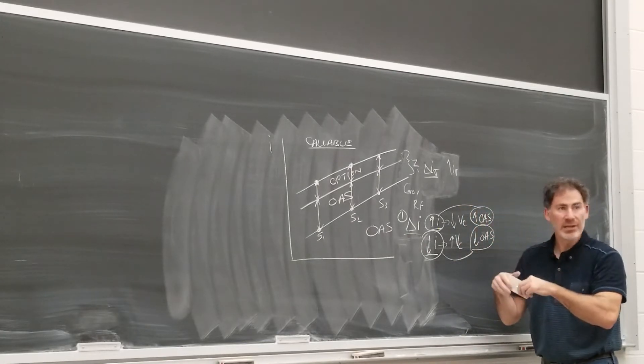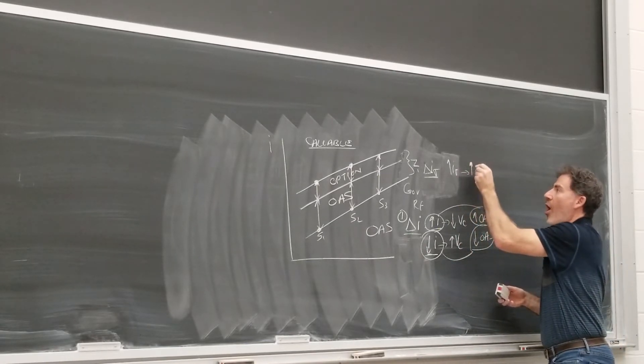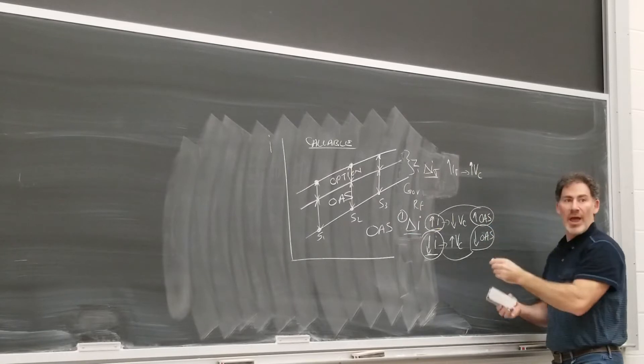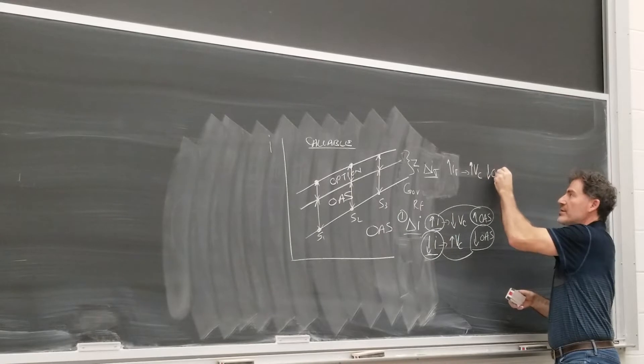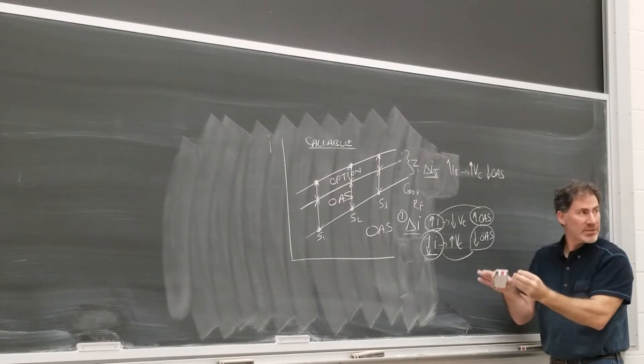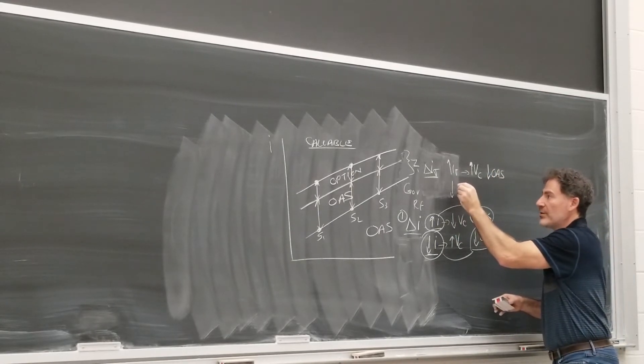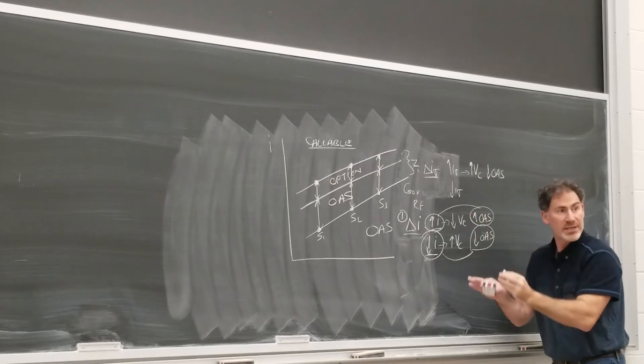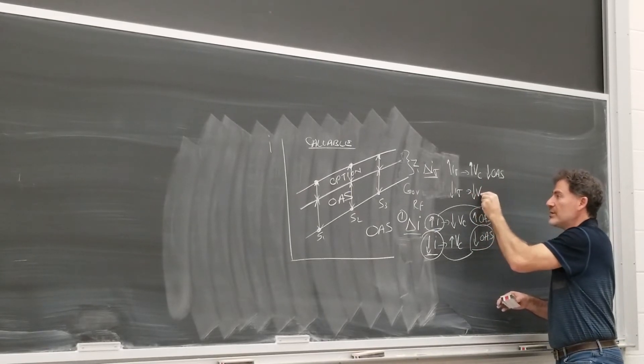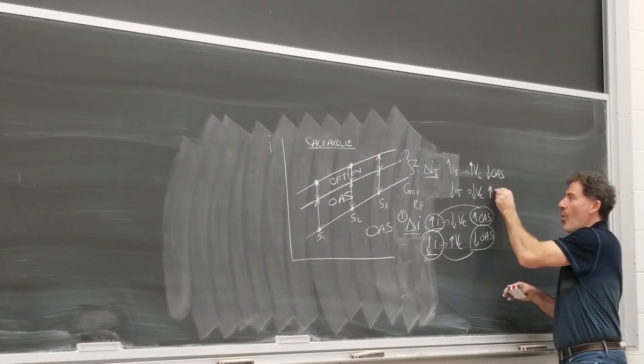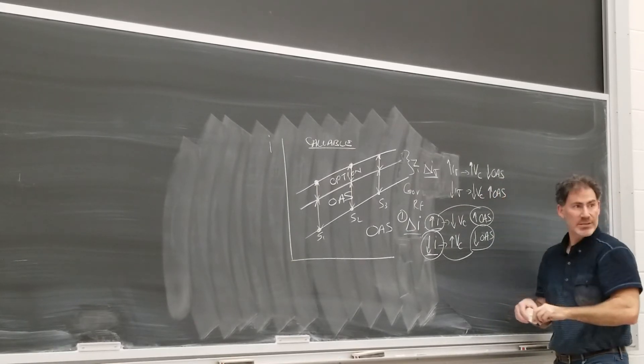Higher volatility, higher option value. And if the option value increases, the OAS must decrease. Decreasing OAS. And let's look at the other case. If the volatility of interest rates declines, then the value of the call decreases. And the OAS increases.